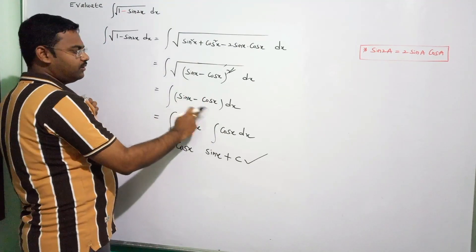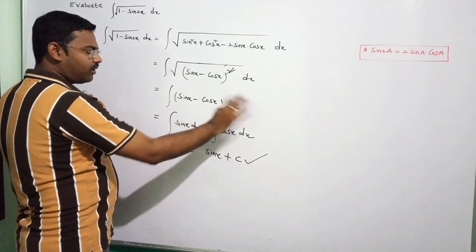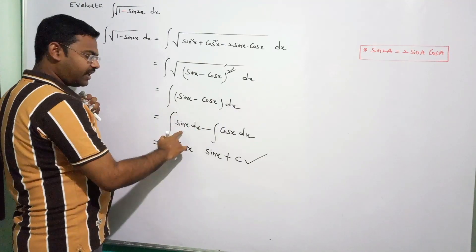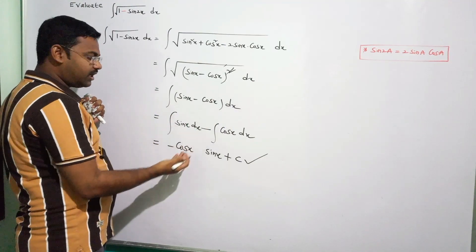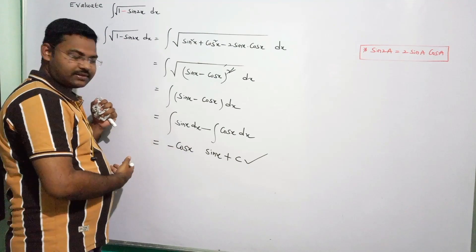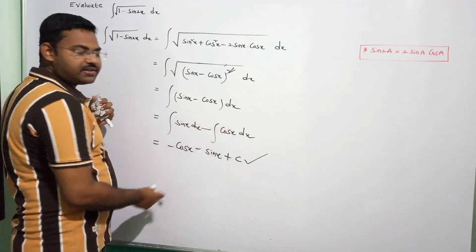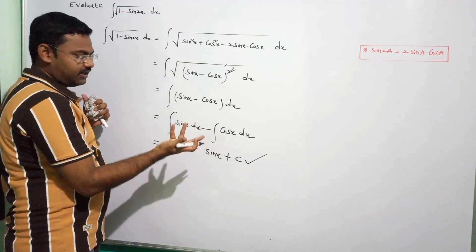So the integral becomes sinx dx minus cosx dx. Integration of sinx is −cosx, and integration of −cosx is −sinx. Final answer: −cosx − sinx + c.